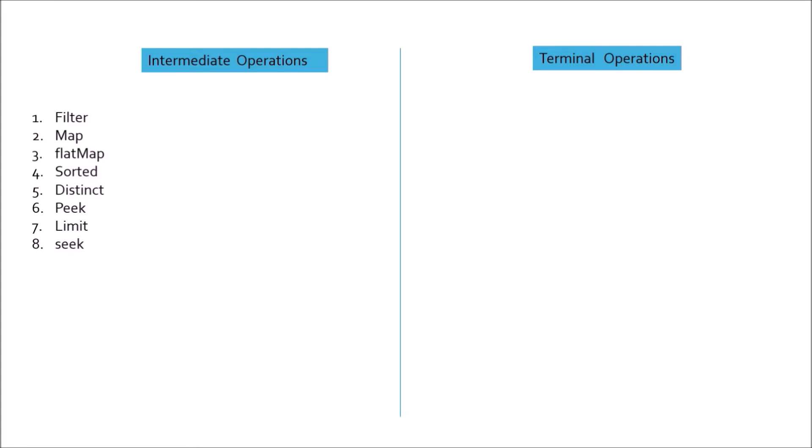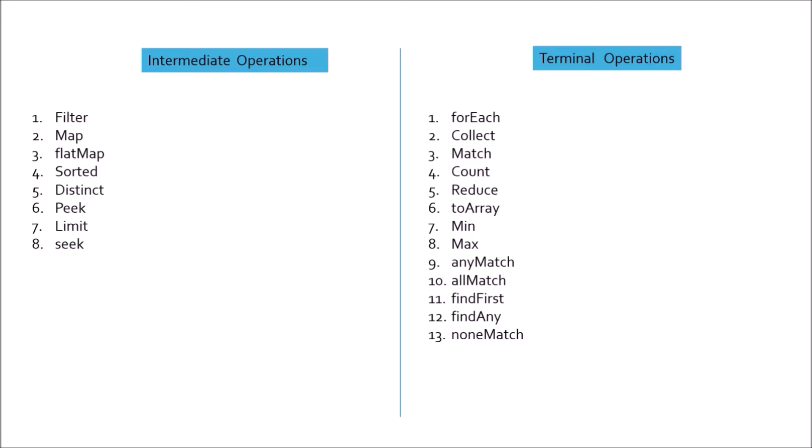Out of these eight intermediate operations, in the real world we mostly use filter, map, flat map, and sorted — the frequency of using the first four is very high compared to the last four. In case of terminal operations, we have: forEach, collect, match, count, reduce, toArray, min, max, anyMatch, allMatch, findFirst, findAny, and noneMatch. In real-world usage, the most frequently used are forEach, collect, count, reduce, toArray, and match.